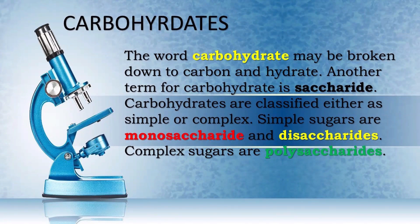Ang salitang carbohydrate ay nanggaling sa dalawang salita: carbon at hydrate. At meron din itong ibang tawag — ang saccharide. May dalawang klasifikasyon ng carbohydrate: ang simple at complex. Ang simple sugar ay monosaccharides at disaccharide, at ang complex naman ay polysaccharide. Para mas maintindihan natin, makinig ng mabuti.